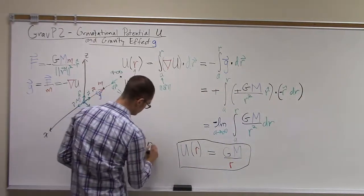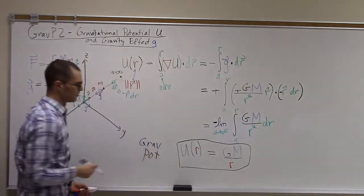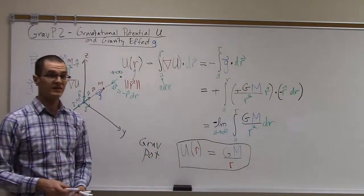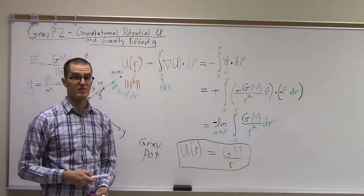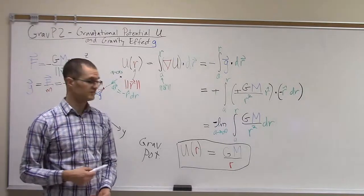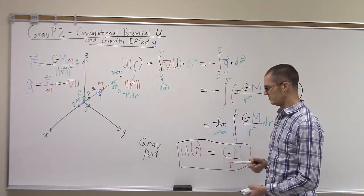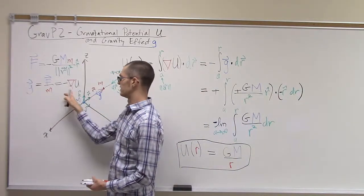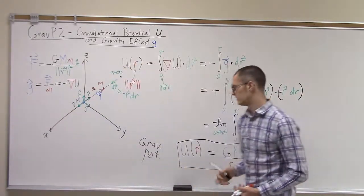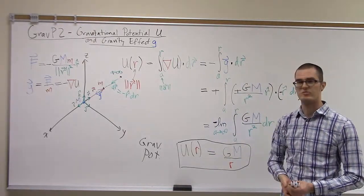And that's what we call the gravitational potential. So notice that that's a scalar field. And that's convenient, often, when we're solving gravity problems. It's easier to work with a scalar, evaluate what the gravitational potential is, and then if we want to get the gravitational field vector, we just take the gradient of this scalar field. So often that makes it a little bit easier to evaluate.